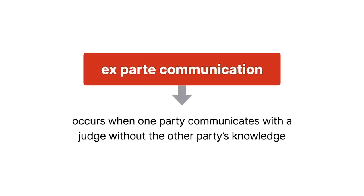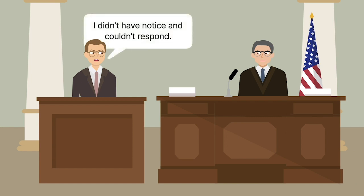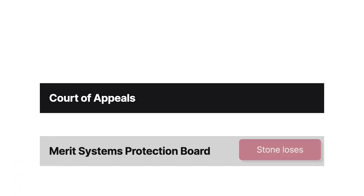An ex-parte communication occurs when one party communicates with a judge without the other party's knowledge. Stone argued there was a harmful error in his removal proceedings because he didn't have notice and couldn't respond to the ex-parte communications. The administrative judge held that there wasn't a harmful error. Stone appealed the administrative judge's decision, arguing that the memos introduced new, highly prejudicial, and unchallenged charges against Stone, which violated his due process rights.